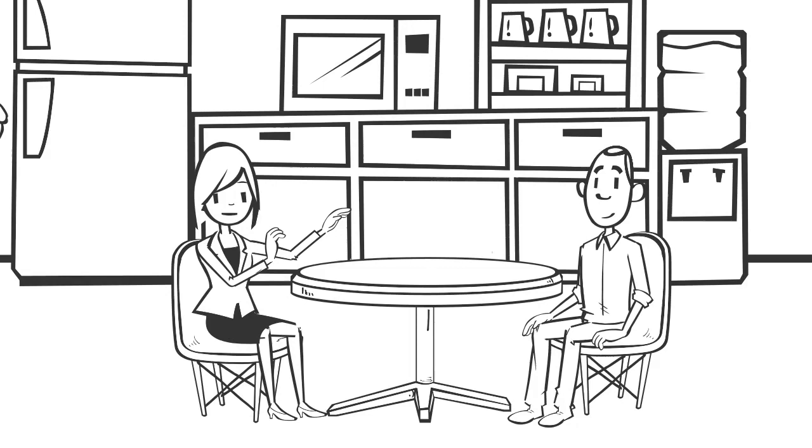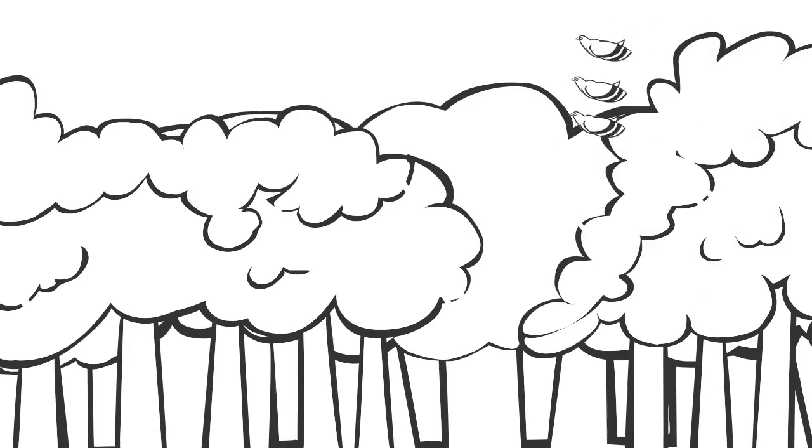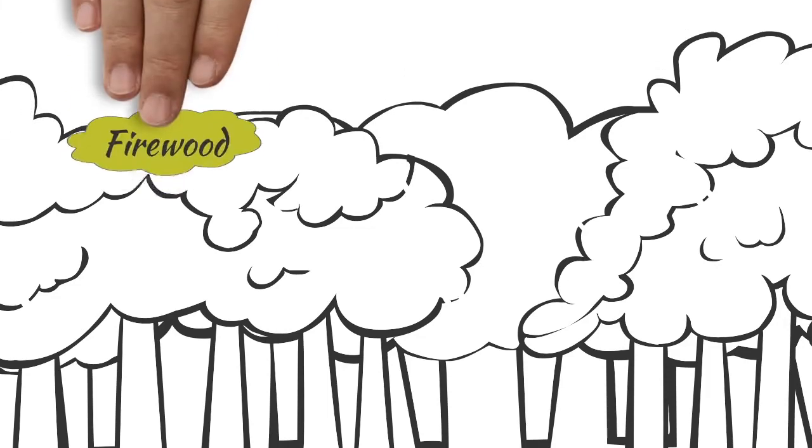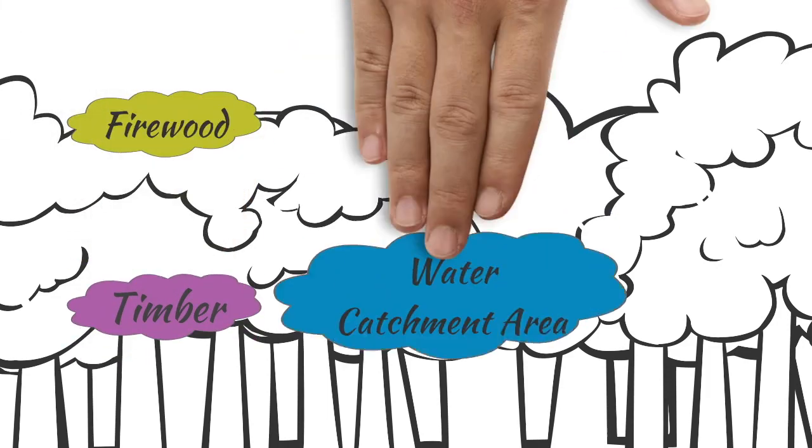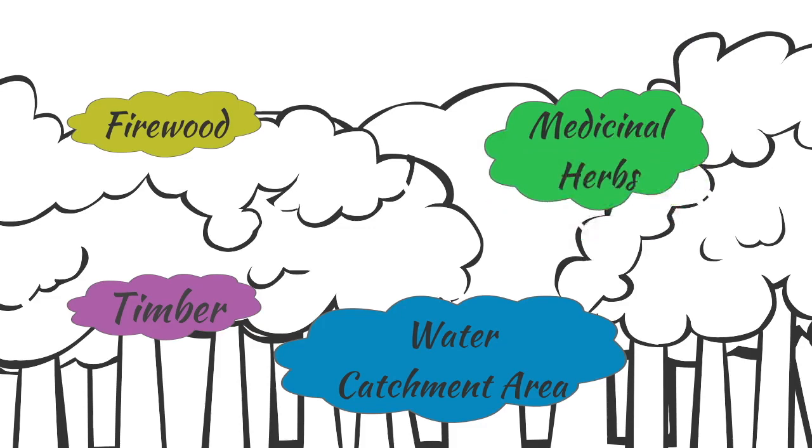I will give you an example. A forest is a complete ecosystem which provides food, shelter to a wide variety of species. It provides firewood, timber, water catchment area, medicinal herbs and so on, to us humans.